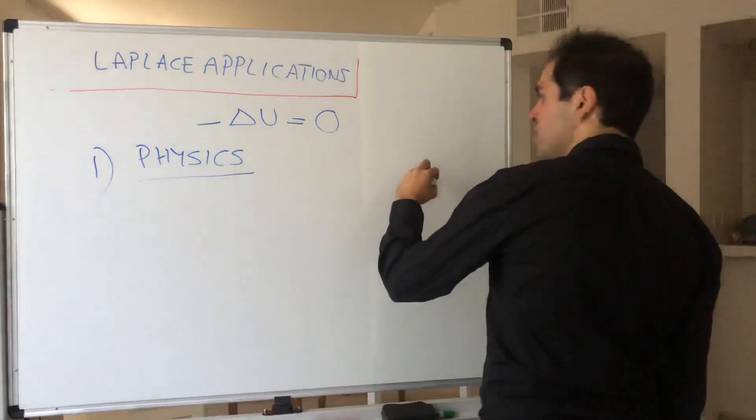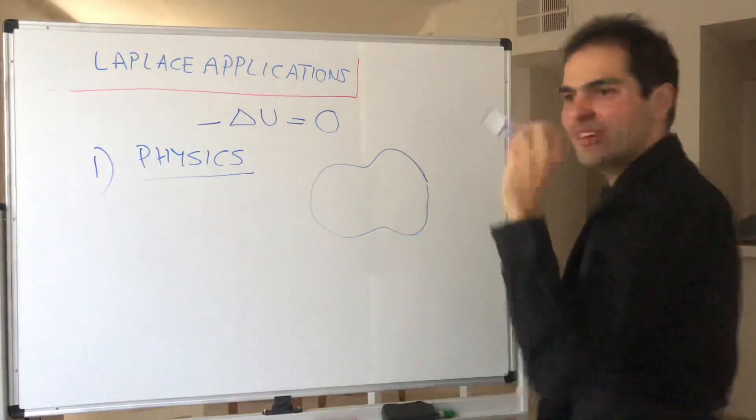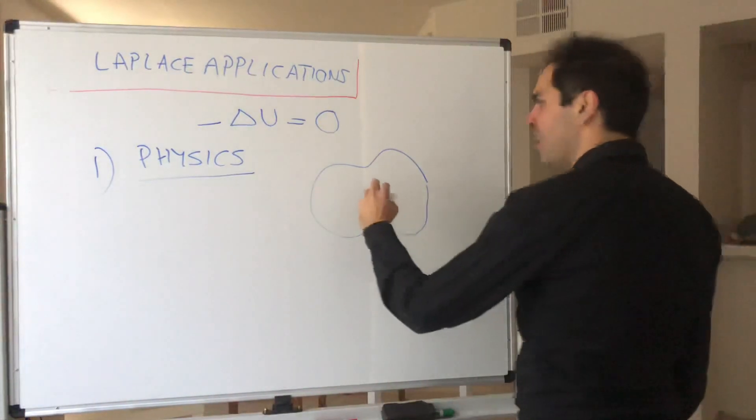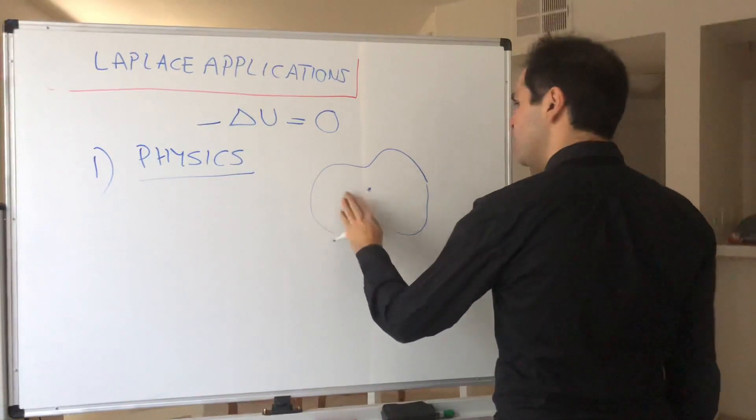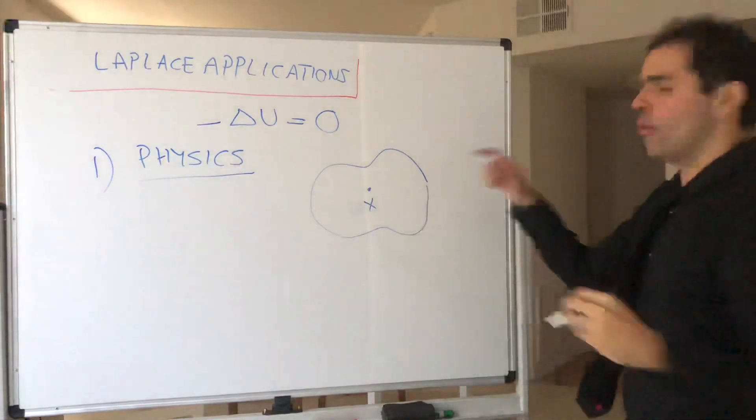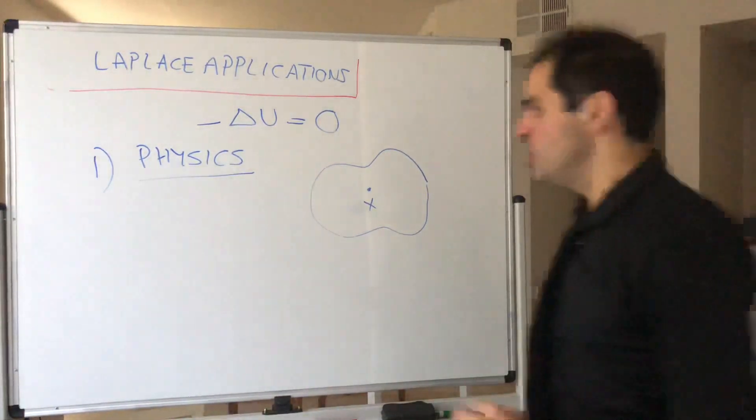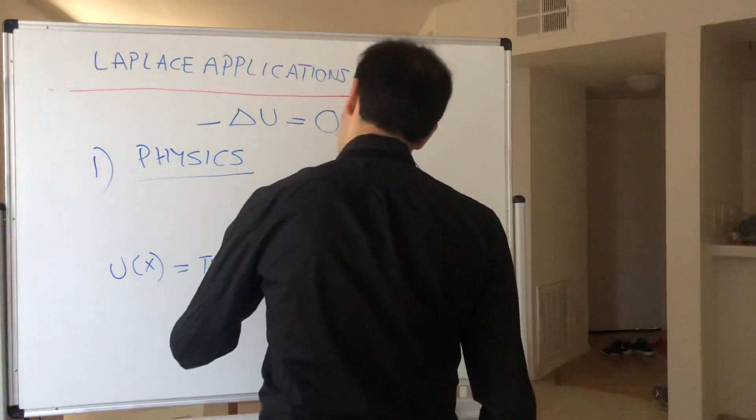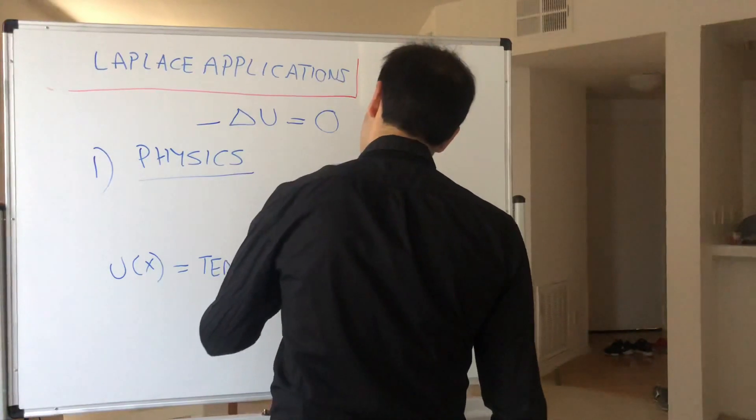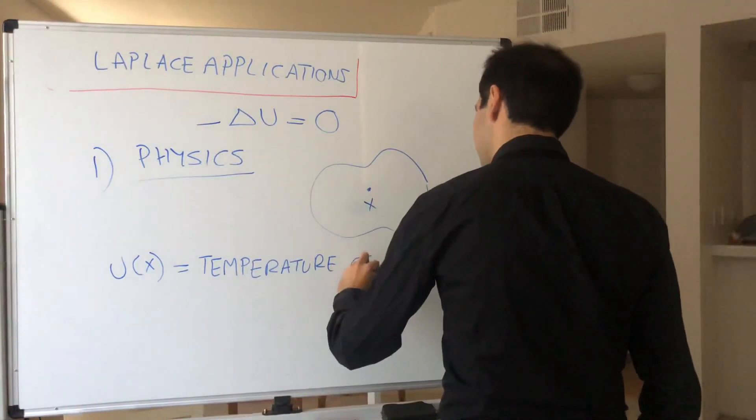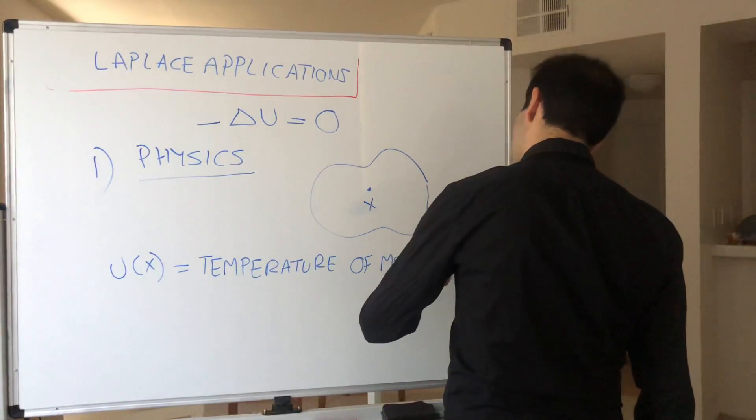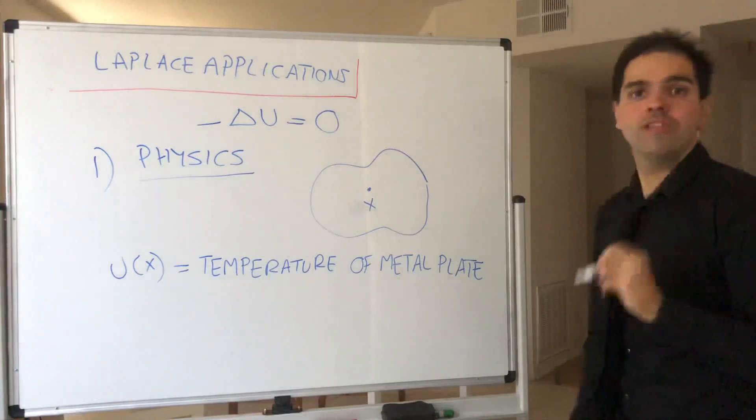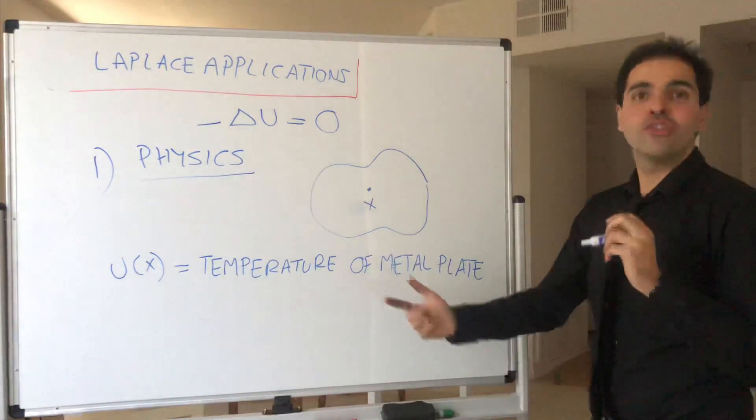In other words, suppose you have a metal plate or a metal cake that you leave out for a very long time until the temperature has settled. Then it turns out, given a point x in your region, U of x gives you the temperature of a metal plate.